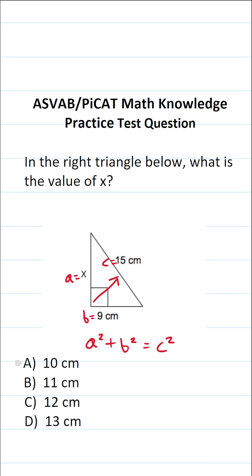With that in mind, let's plug these in. This becomes x squared plus 9 squared equals 15 squared.